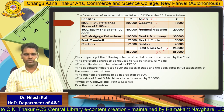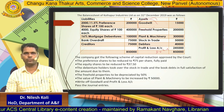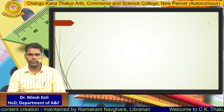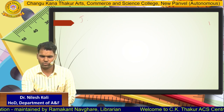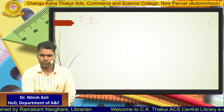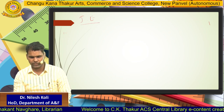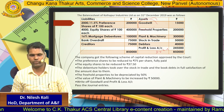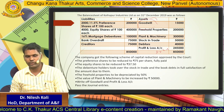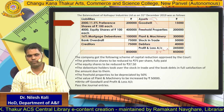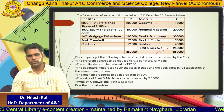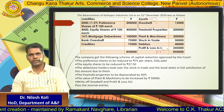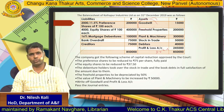In the question they have asked to pass the journal entries. The first transaction is that preference shares are to be reduced to ₹75 per share fully paid. The entry will be: 11.5% preference share capital account debit, to 11.5% preference share capital account credit, and to capital reduction account. The company has reduced the preference share capital by ₹25 per share, and that amount is transferred to the capital reduction account.